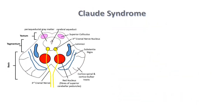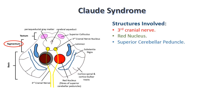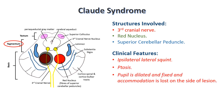Next is Claude's syndrome. Here the lesion is at the tegmentum of the brainstem as shown in the figure. Structures involved will be the 3rd cranial nerve, the red nucleus, and fibers of the superior cerebellar peduncle entering into the red nucleus. Signs will be all features of 3rd nerve palsy, which we discussed, along with contralateral cerebellar ataxia and tremors due to involvement of the superior cerebellar peduncles.